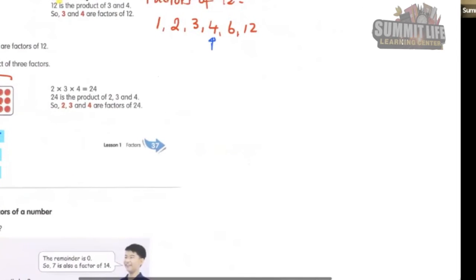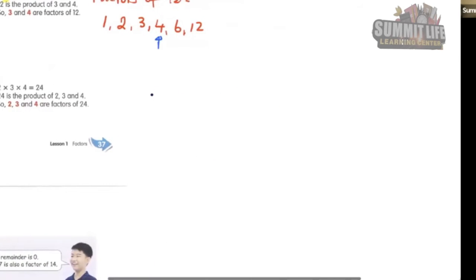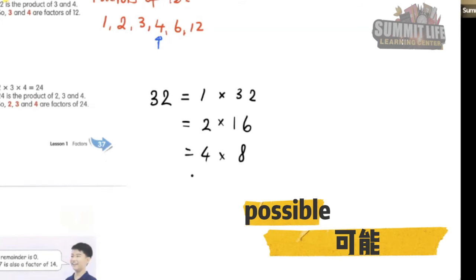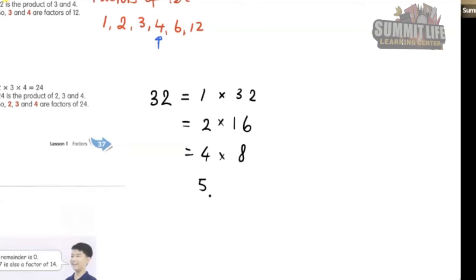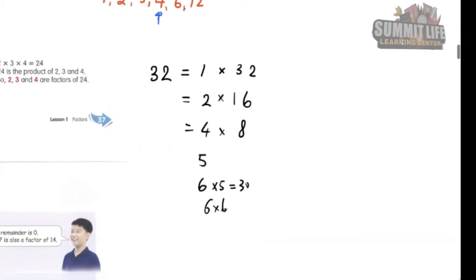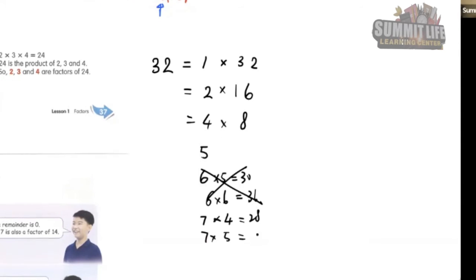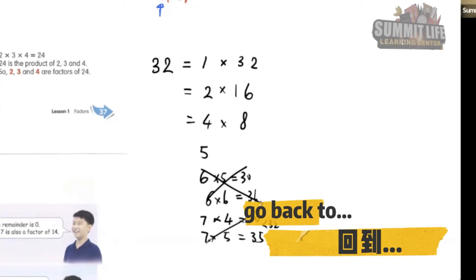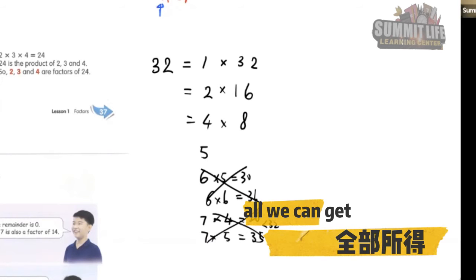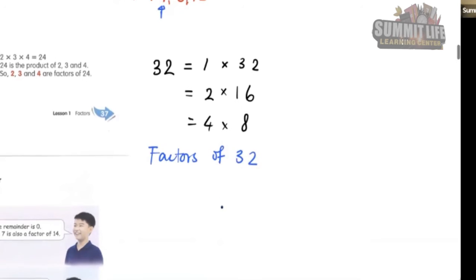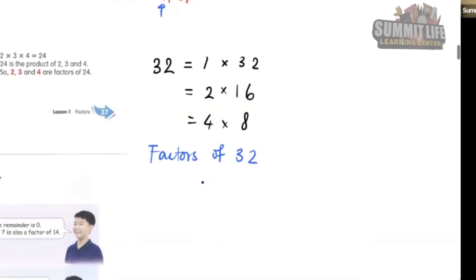What are the numbers that can form 32? We begin with 1 times 32, then 4 times 8, and 2 times 16. Is 5 possible? No. Is 6 possible — can 6 multiply a number to get 32? We cannot get 32. So 6 is not possible. 7 is not possible. So it goes back to 8. The factors of 32 — what numbers can form 32 by multiplication? You get 1, 2, 4. 8 is also a factor. You just take every number here to check what the factors are.